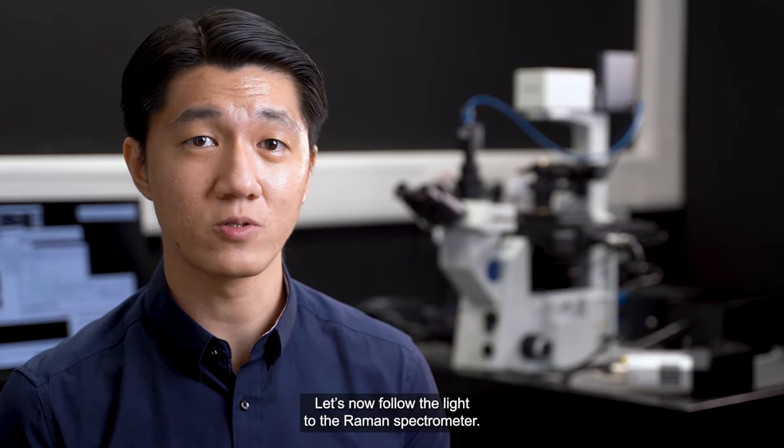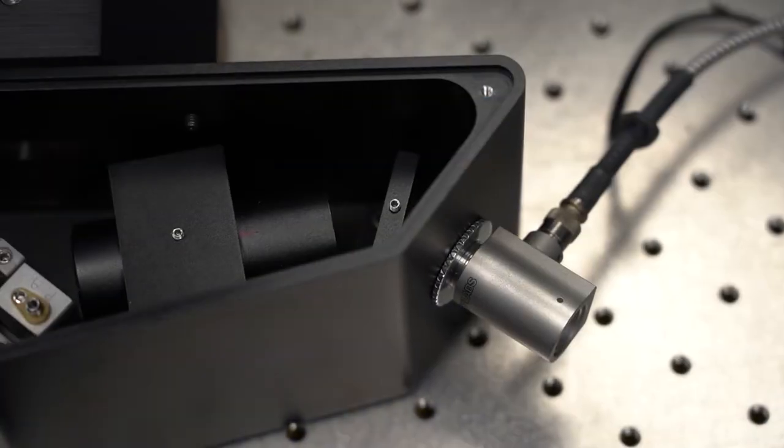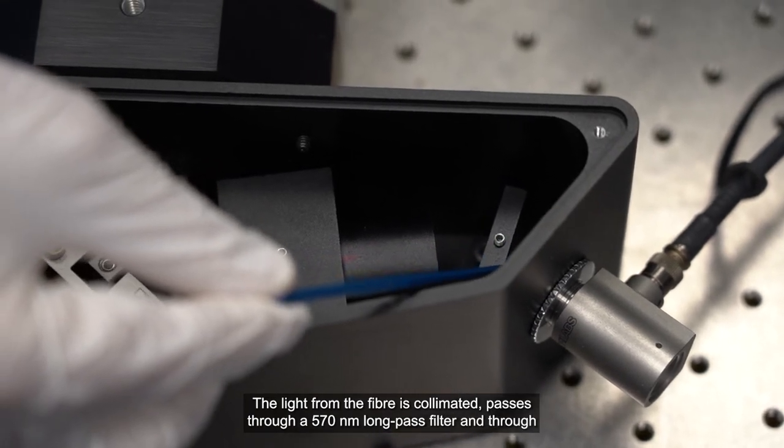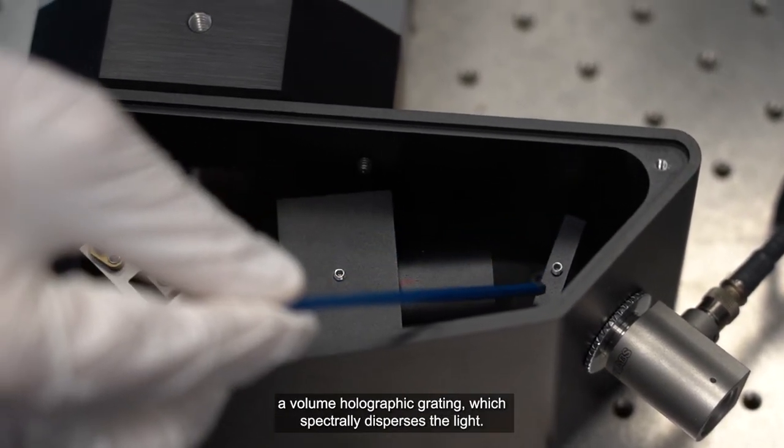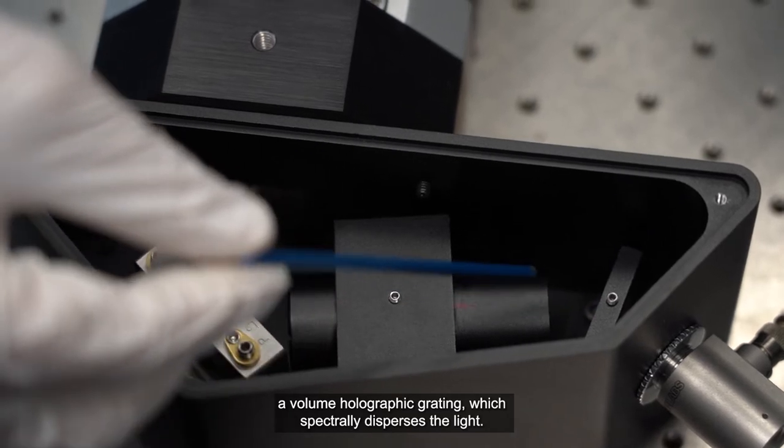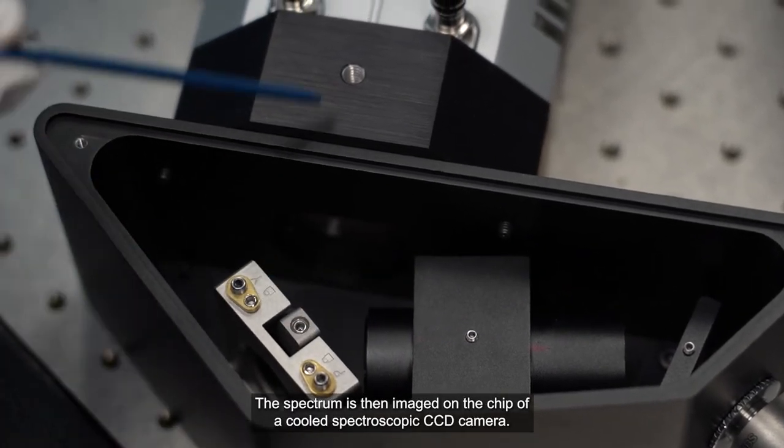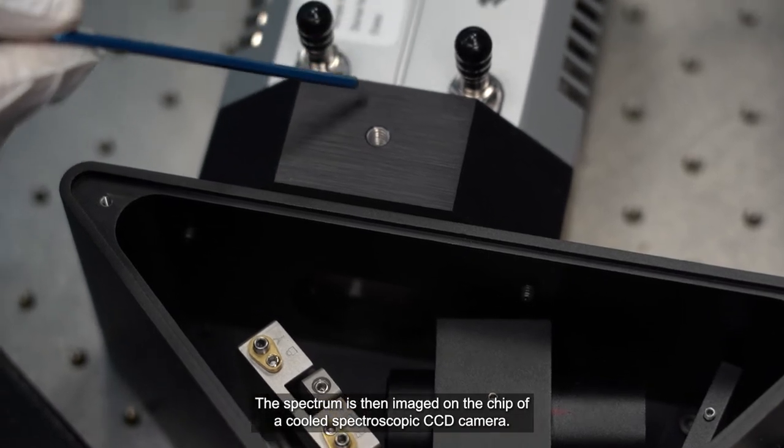Let's now follow the light to the Raman spectrometer. The light from the fiber is collimated, passes through a 570 nanometer long-pass filter and through a volume holographic grating, which spectrally disperses the light. The spectrum is then imaged on a chip of a cooled spectroscopic CCD camera.